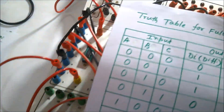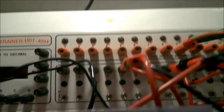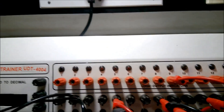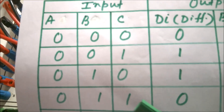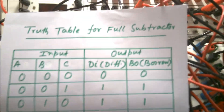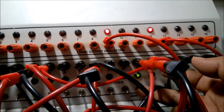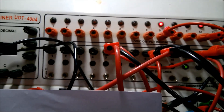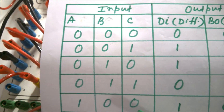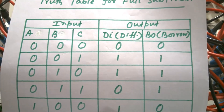Now you can see A, B, C inputs; the Difference output is on the left and Borrow on the right. According to the truth table, if all three inputs are 0, both Difference and Borrow are 0. If C equals 1 and A and B equal 0, both Difference and Borrow should be 1. I switch on C and you can see both become 1 — the second row is verified. Next, if B equals 1 and A and C are both 0, Difference and Borrow should both be 1.